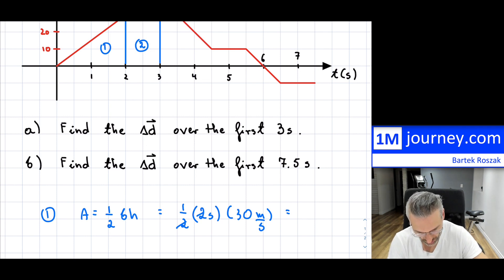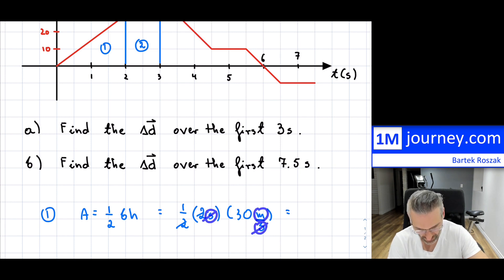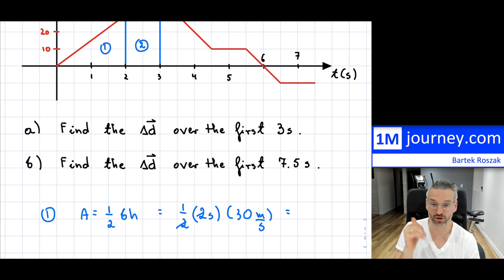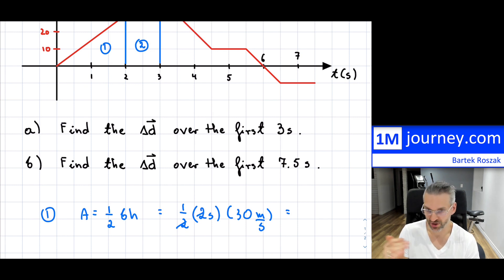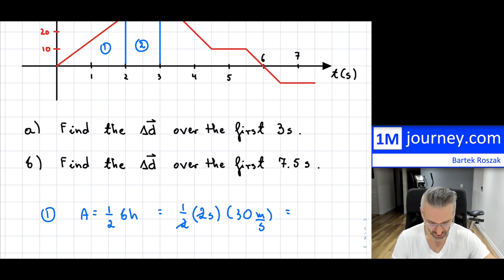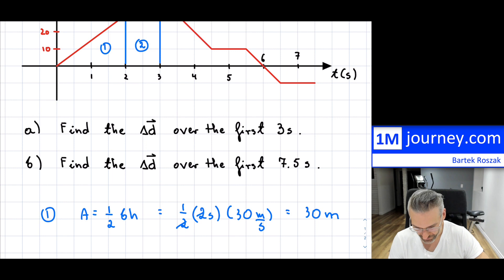What I want you to pay attention to — the reason I left the units — is that the seconds cancel and give me meters. That's why the area under the actual curve gives you the displacement. You're back to the units of meters, and that's why you take the area under the curve: to cancel off the units. So this is going to be 30 meters.